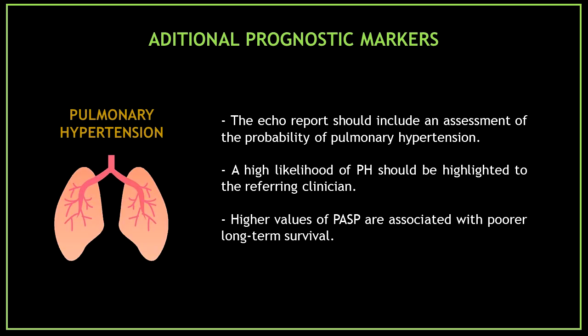The last additional prognostic marker is pulmonary hypertension. The echo report should include an assessment of the probability of pulmonary hypertension, and a high likelihood of pulmonary hypertension should be highlighted to the referring clinician. Higher values of pulmonary artery systolic pressures are associated with poorer long-term survival.